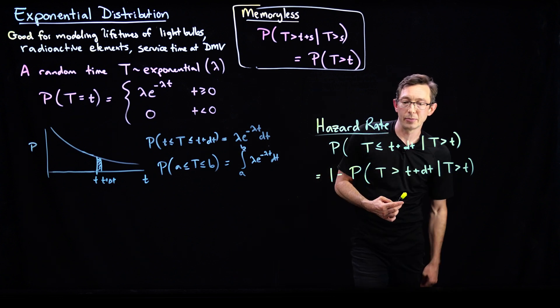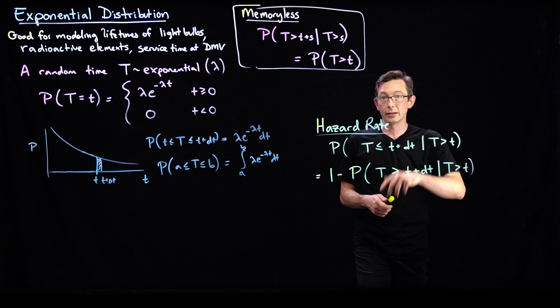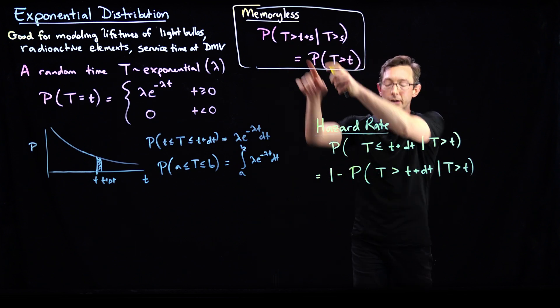And this thing we can actually compute. So the probability of T being greater than t plus delta t, given that I've already lasted t, now I can use this memoryless property.